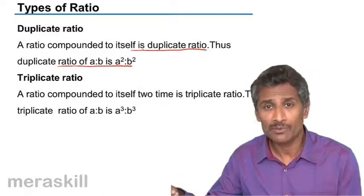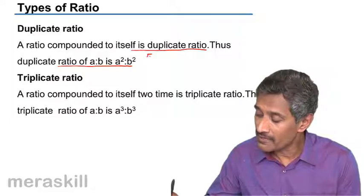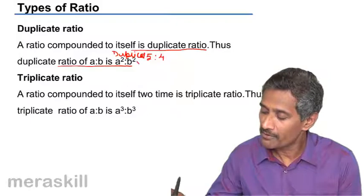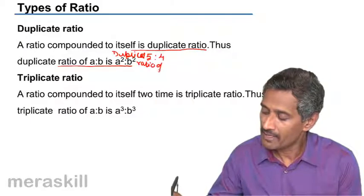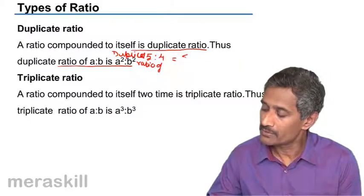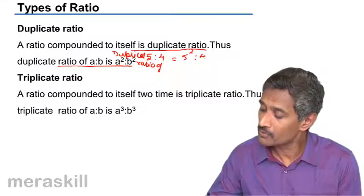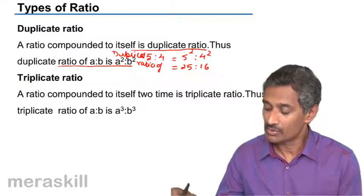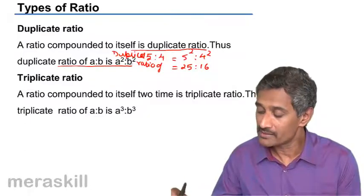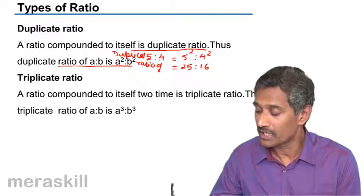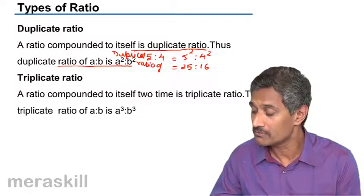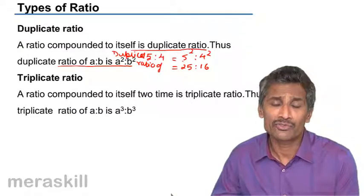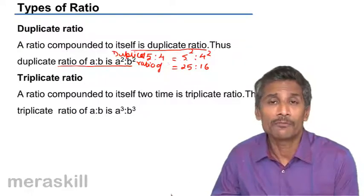Let's recap an example. Take 5 is to 4. The duplicate ratio of 5 is to 4 would be 5 square is to 4 square, that is 25 is to 16. Hence, the duplicate ratio of A is to B is A square is to B square. Similarly, the duplicate ratio of 2 is to 3 would be 4 is to 9.